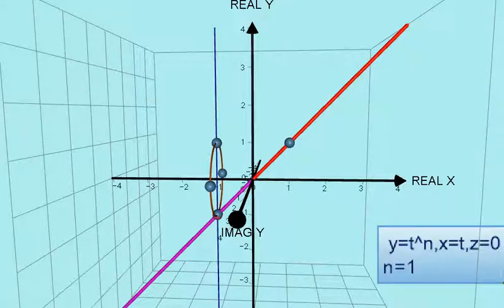Following on from the last video, I'm now going to reduce the value of n and see what happens to the curve y equals x to the n.